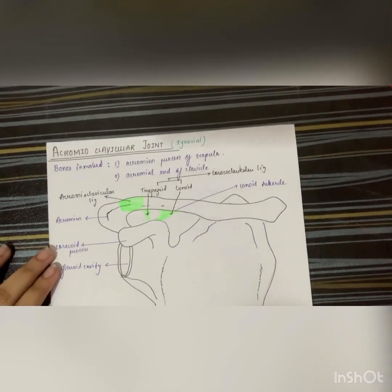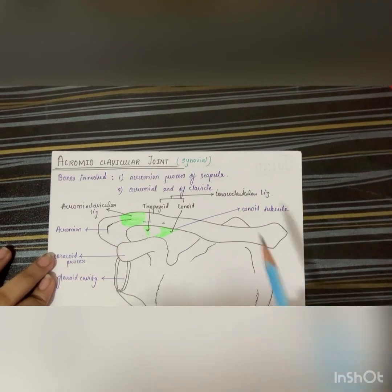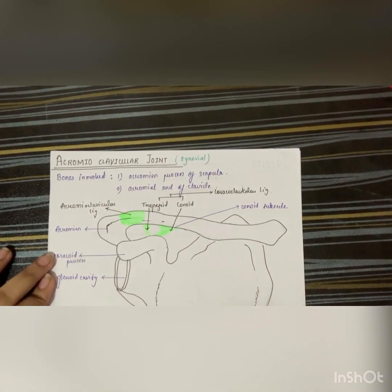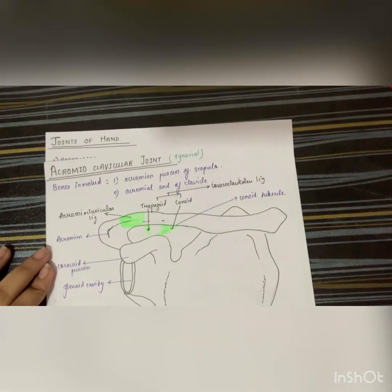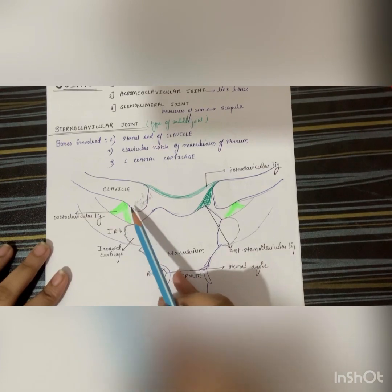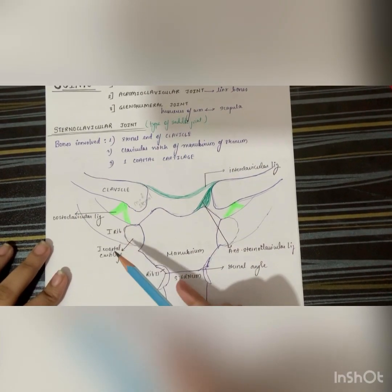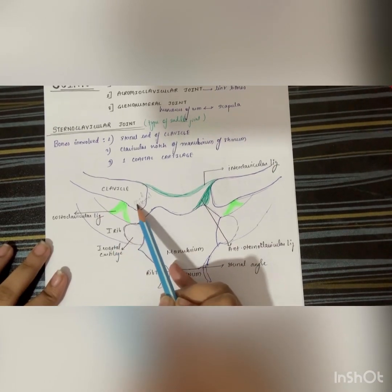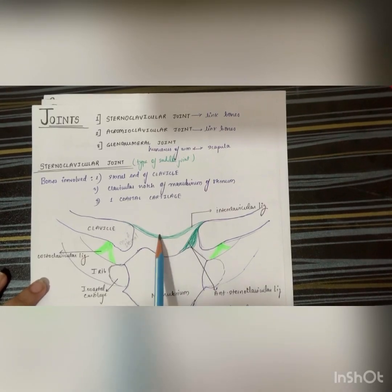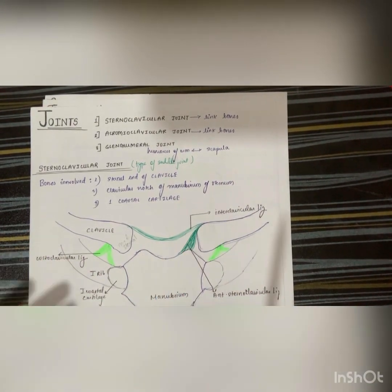Coming to the ligaments, there are three ligaments. First is the coracoclavicular ligament — it has two parts: the trapezoid part and the conoid part. Then the costoclavicular ligament — this connects the anterior surface of the medial end of the clavicle with the first rib. Then the interclavicular ligament — that means it connects the medial ends of the two clavicles.